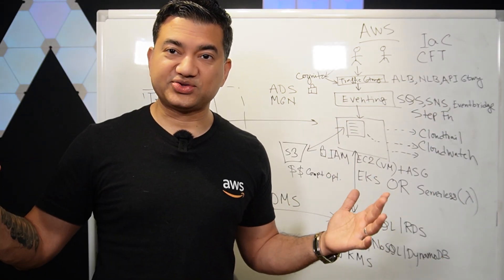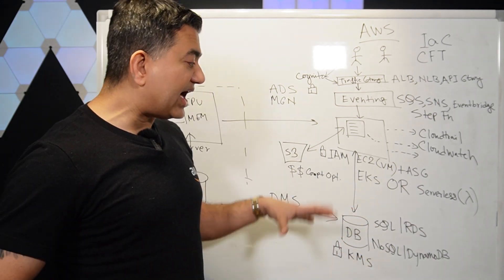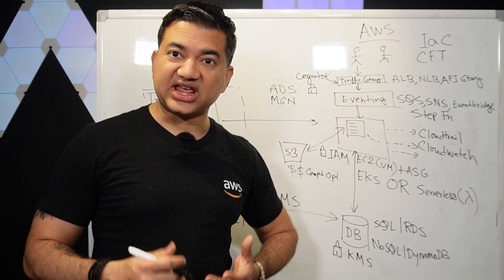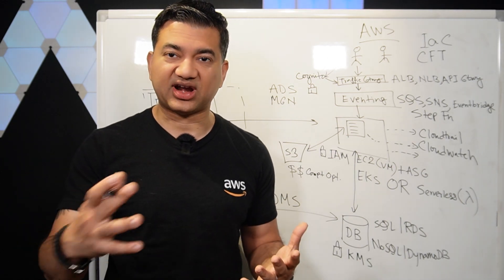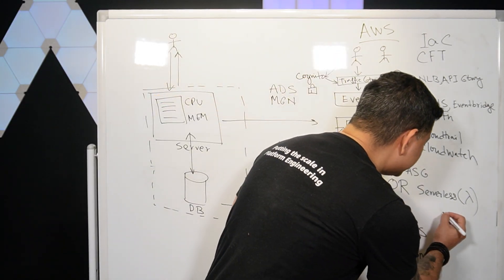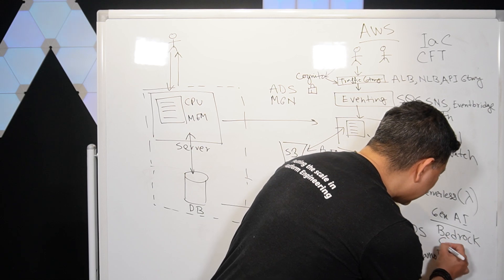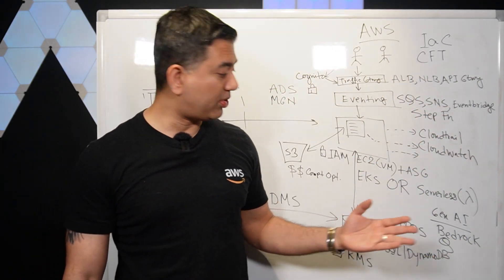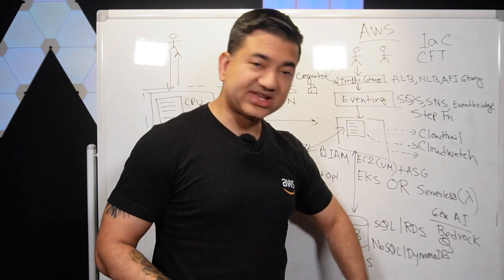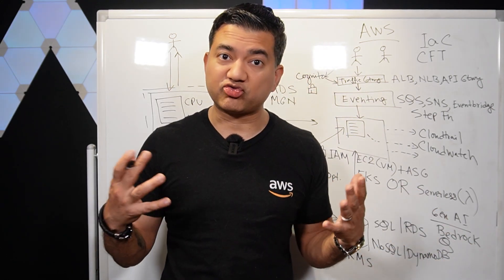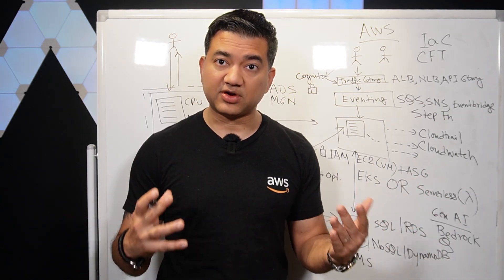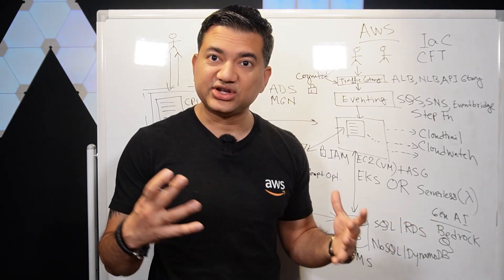No discussion is complete without mentioning Gen AI. One way to integrate it is to have Gen AI analyze your data and tell you how to grow your business, etc. For Gen AI, you need to know at least two AWS services: Bedrock, and Amazon Q — which is like Amazon's ChatGPT; you can ask questions about AWS services or use it to troubleshoot. Keep in mind this is for general Solutions Architects. If you're going for machine learning specific positions, you also need to know SageMaker.